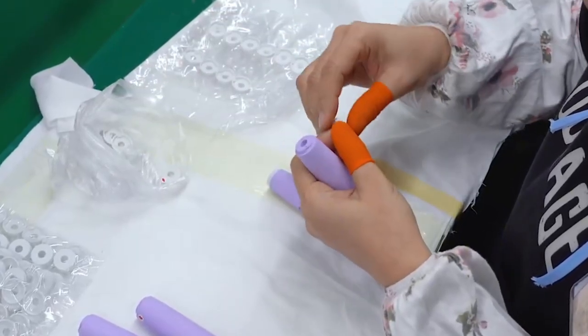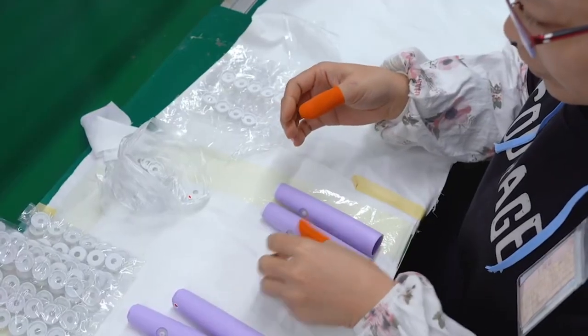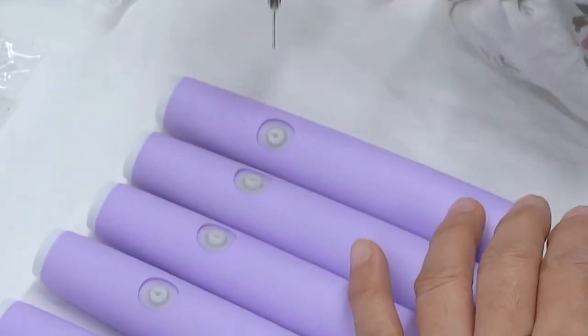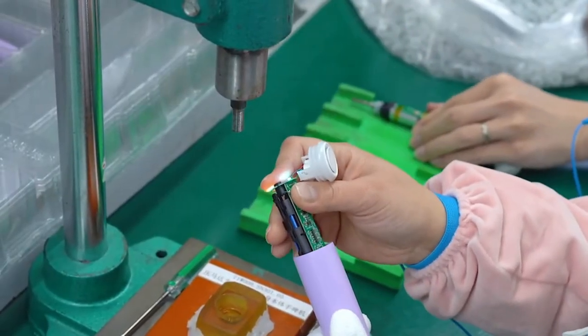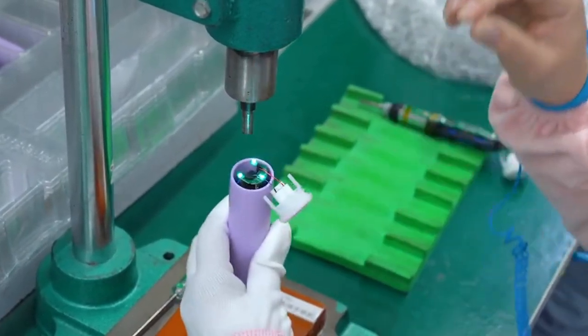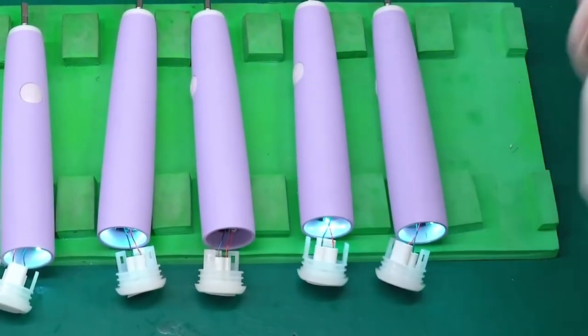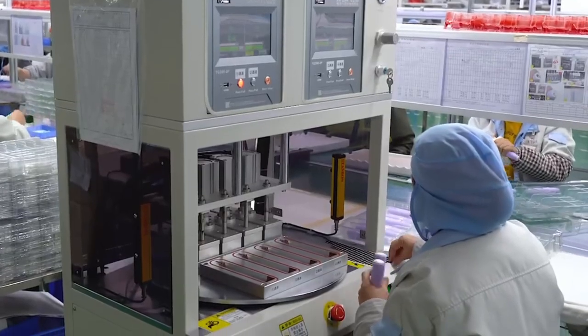Then comes final assembly and sealing. Ultrasonic welds or adhesives fuse brush head and handle, sealing out moisture and protecting the internal electronics. Human inspectors ensure every unit meets visual and functional standards. Even with automation, manual checks remain essential for quality control.